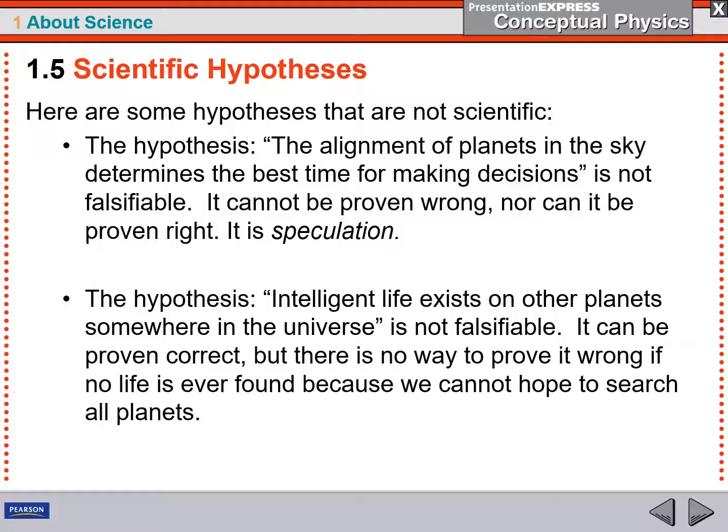The hypothesis intelligent life exists on other planets somewhere in the universe sounds very scientific, but it's not falsifiable. You can show that you are correct if you find intelligent life somewhere. But what if you never find it? There's really no way to prove it wrong because there's no way that we can search every planet out in the universe. That's just way beyond our ability to accomplish.